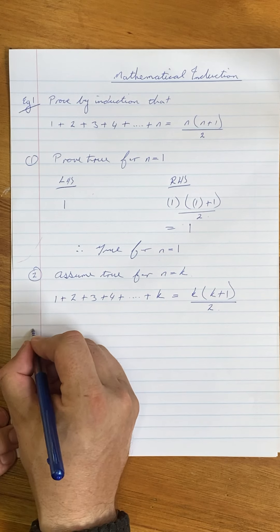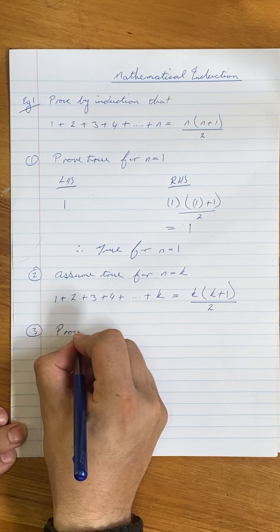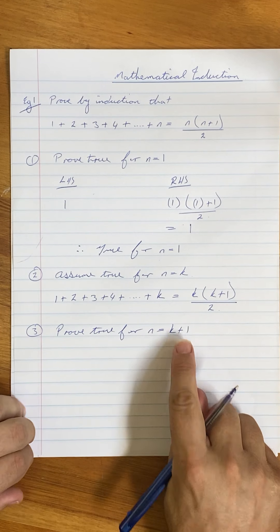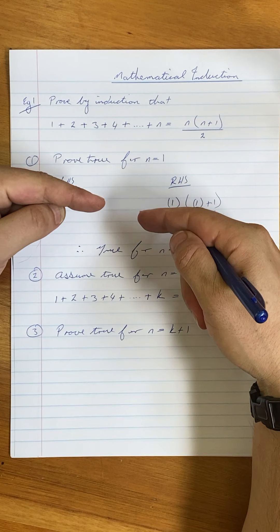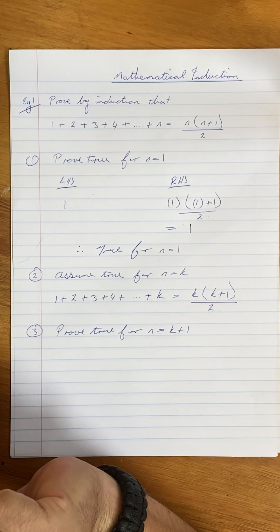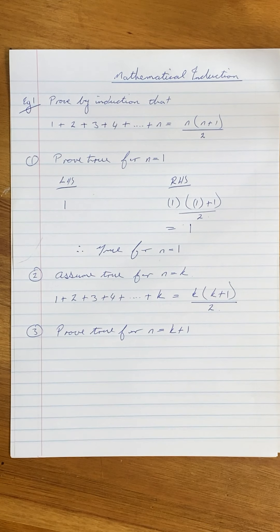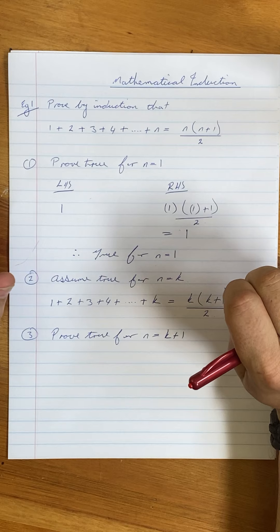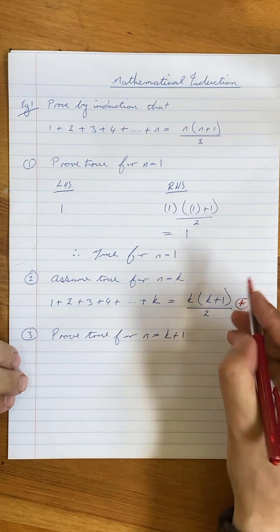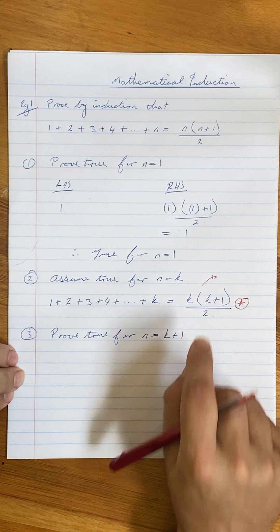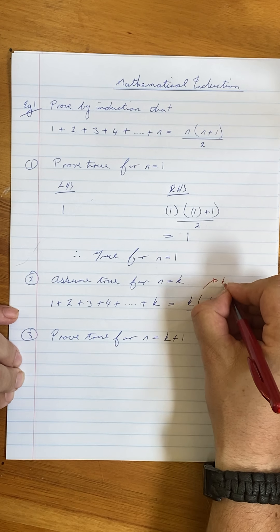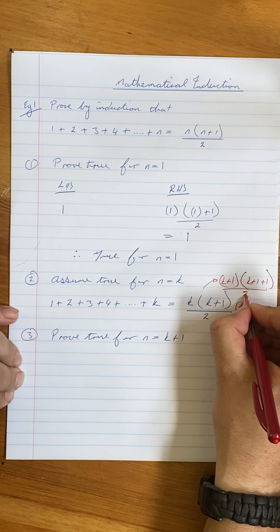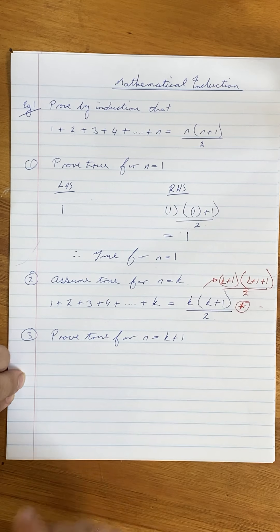Now our next step: we're going to prove true for n is equal to k plus 1. What we're doing here is I'm just checking that the next one holds. If the one afterwards holds, therefore it must be true for all of these numbers. What I'm going to show you before I go through this proof — I'm going to come back to this one from our assumption and cheat a little bit. What we want step 3 to come out to be is if I change all my k's to k plus 1: this k here will be k plus 1, and this k here will be k plus 1 plus 1, all over 2. If I can get step 3 looking like this, then I've proved it.